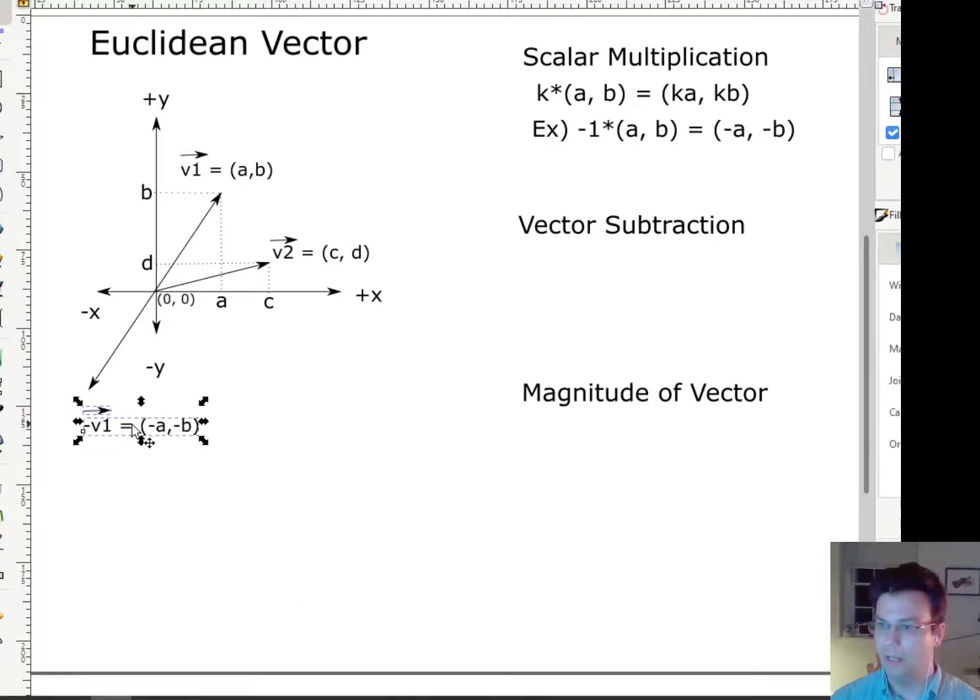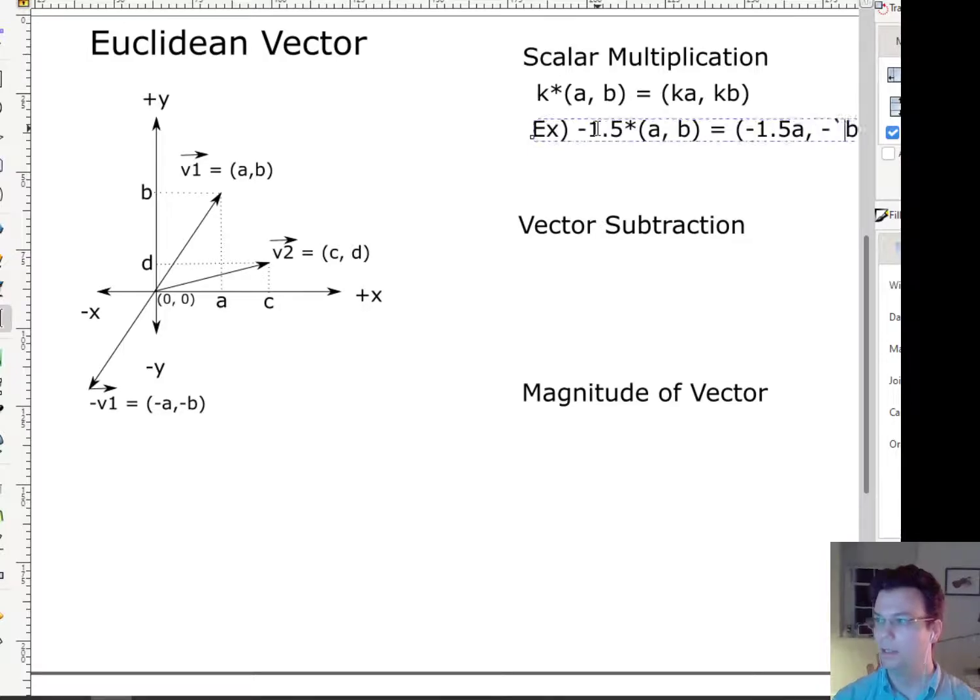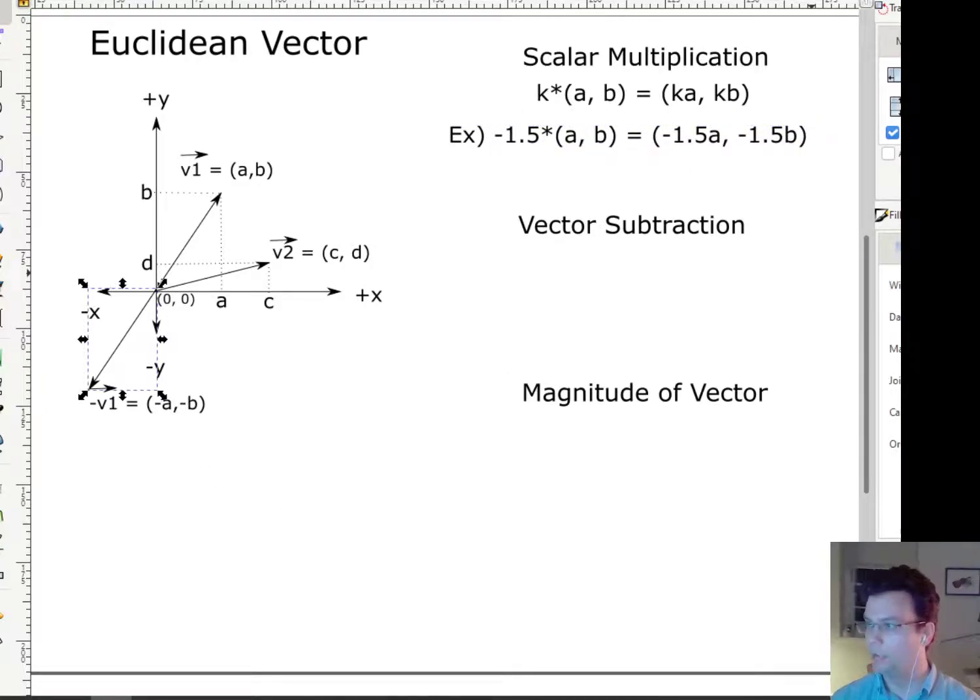Now, of course, I don't just have to have -1. I can also scale and flip the other way. So I could have -1.5 times (a,b), and that would be (-1.5a, -1.5b). So that would be scaling the vector and flipping it. And that would look something like this.